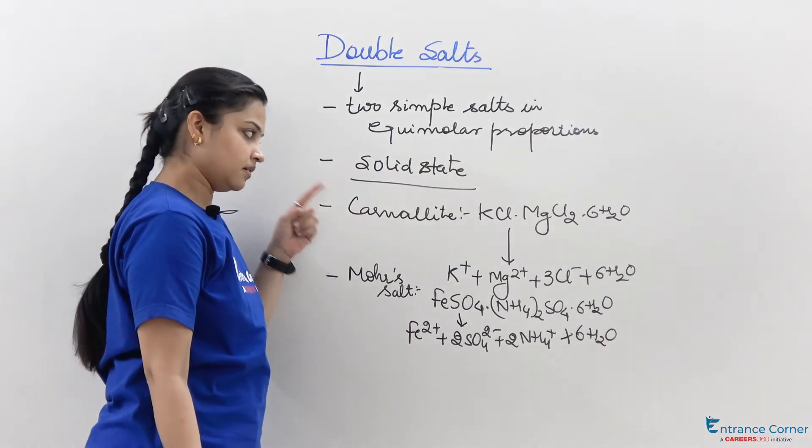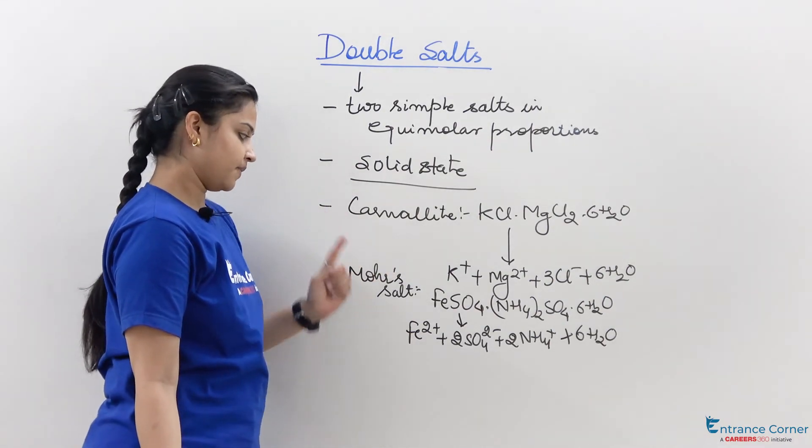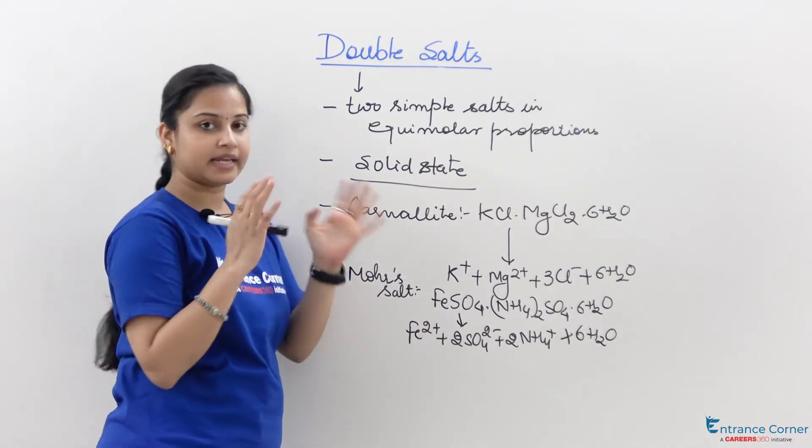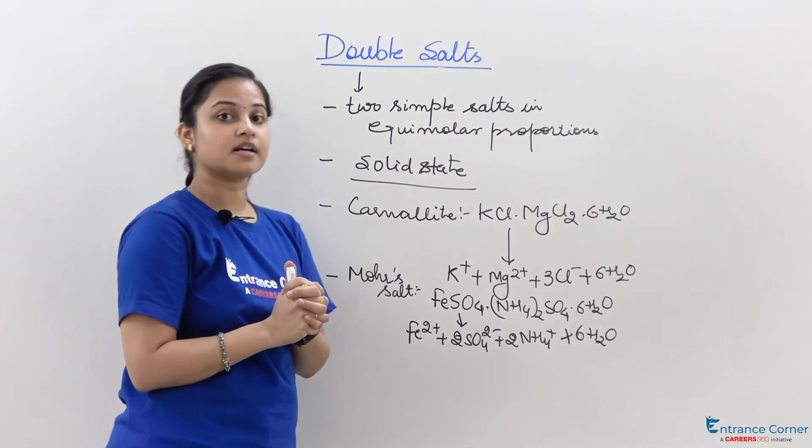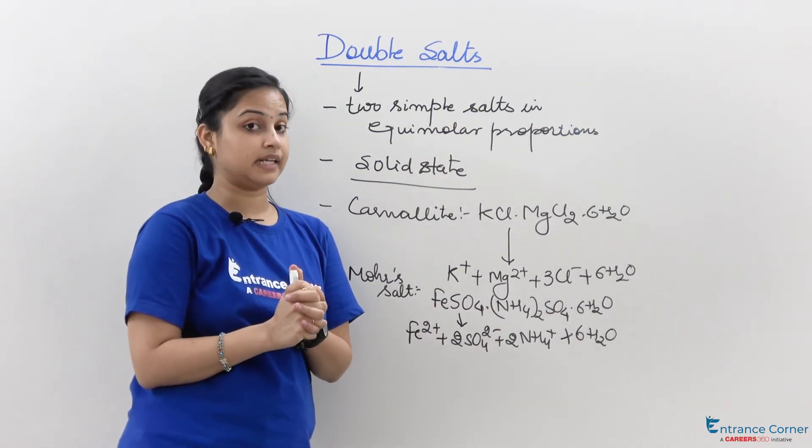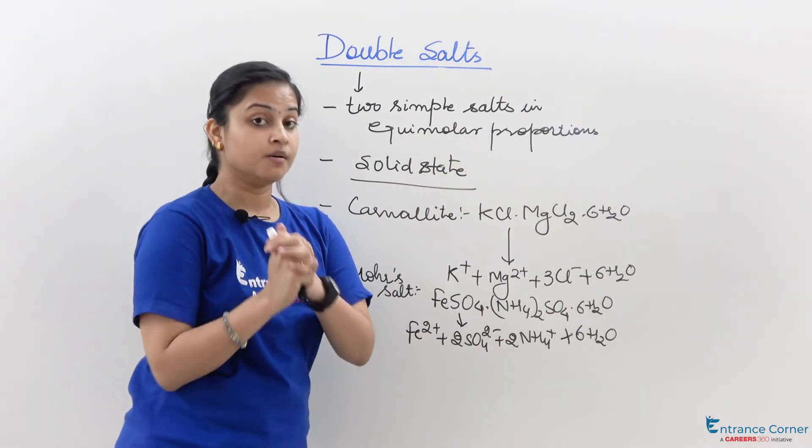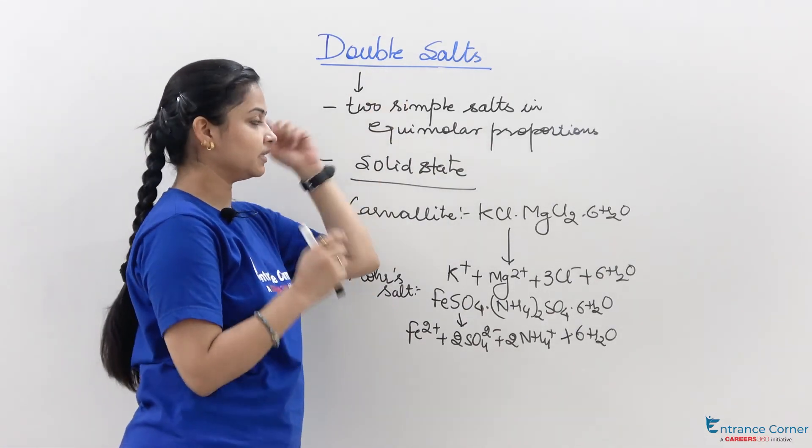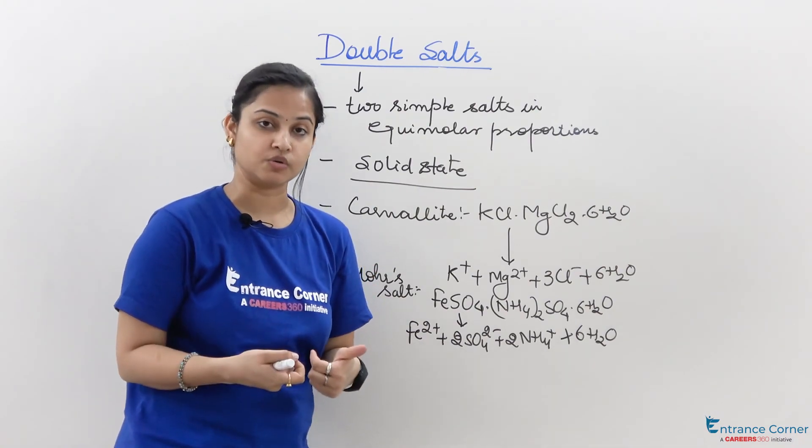So these two are double salts: carnalite and Mohr salt. These are ionic compounds. Double salts are ionic compounds and they do not contain any coordinate bond. Moreover, double salts lose their identity in solution.